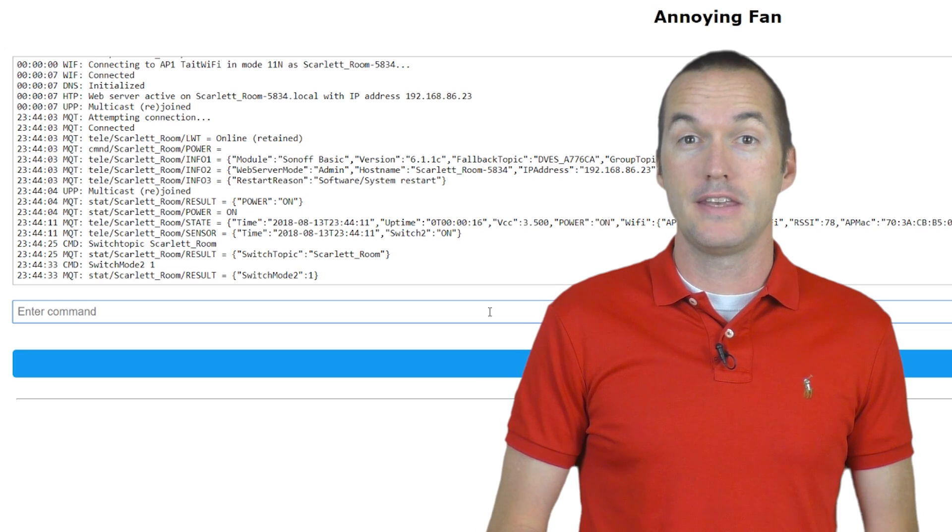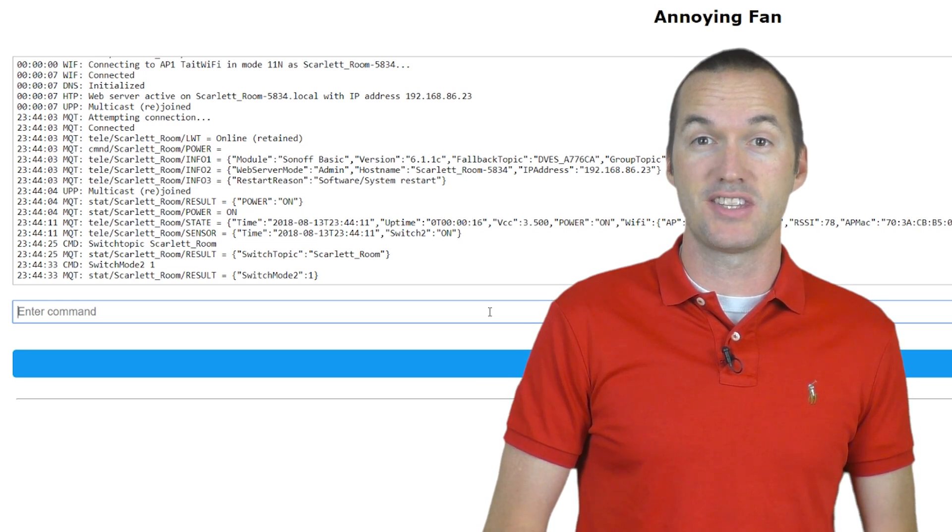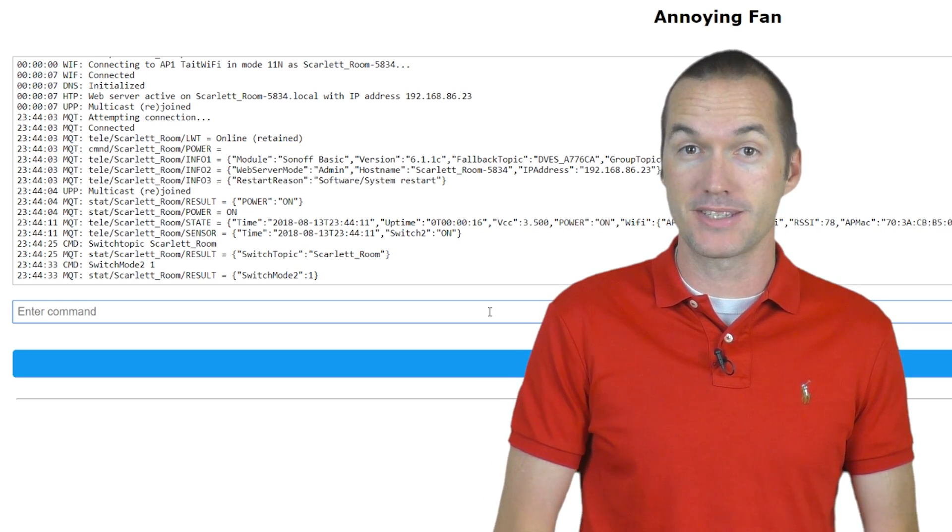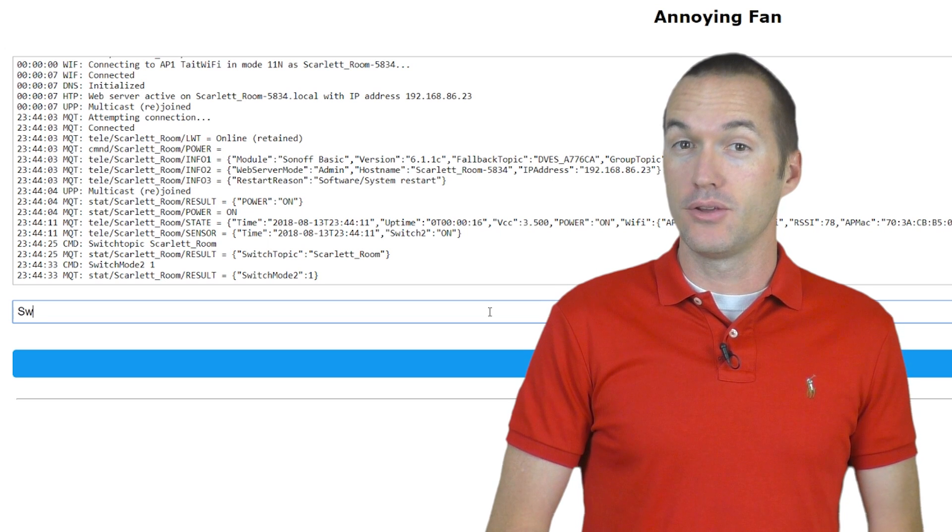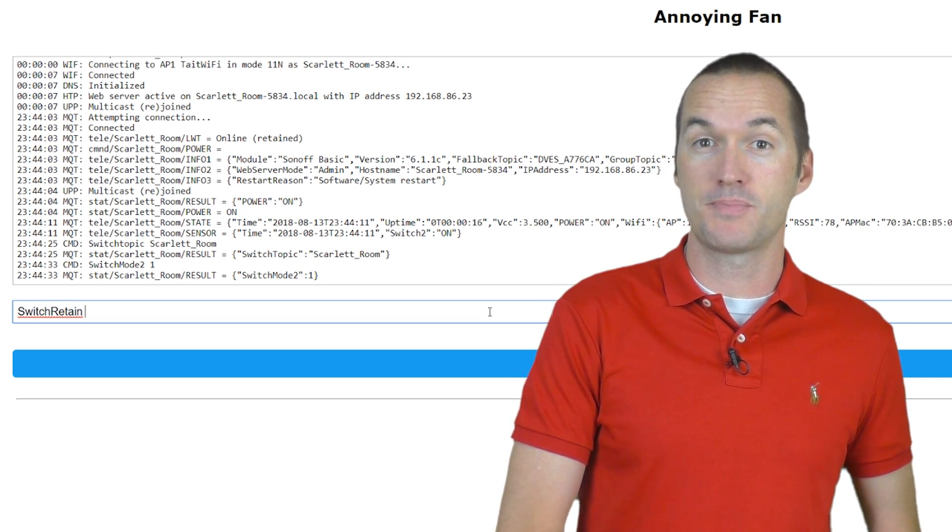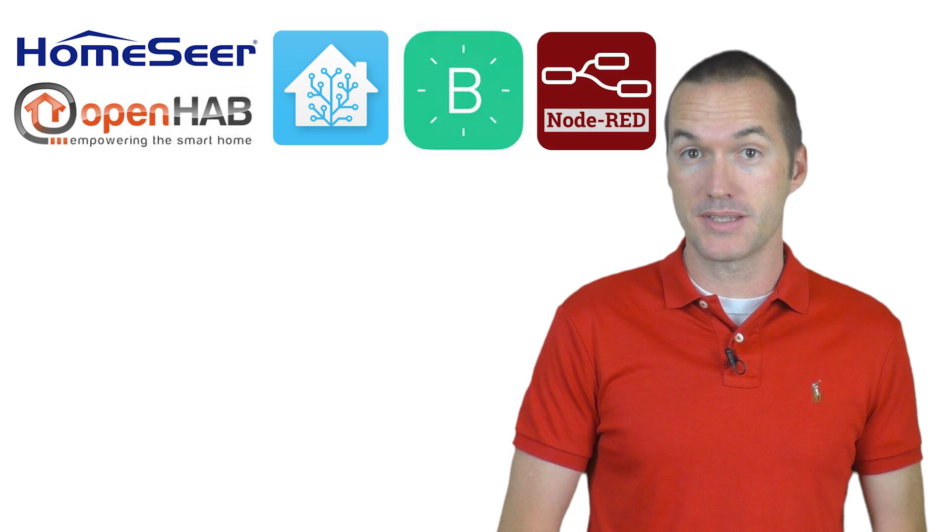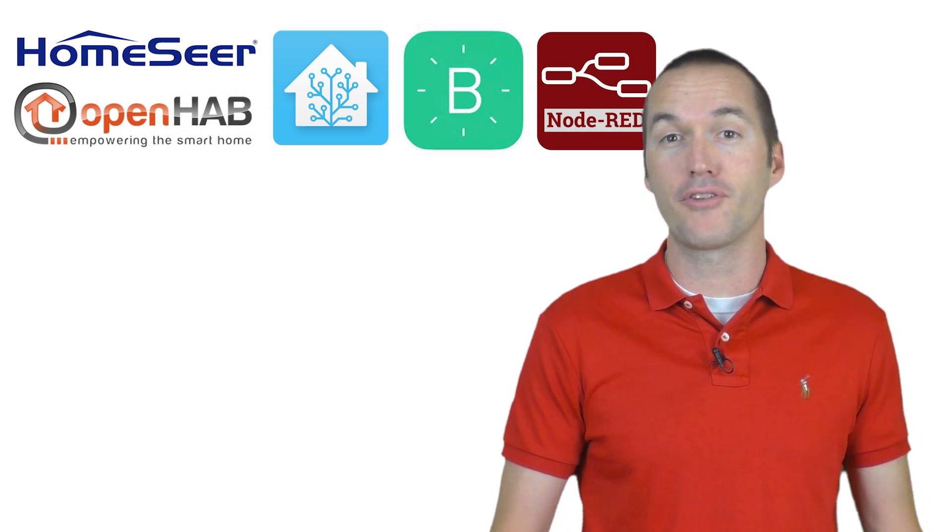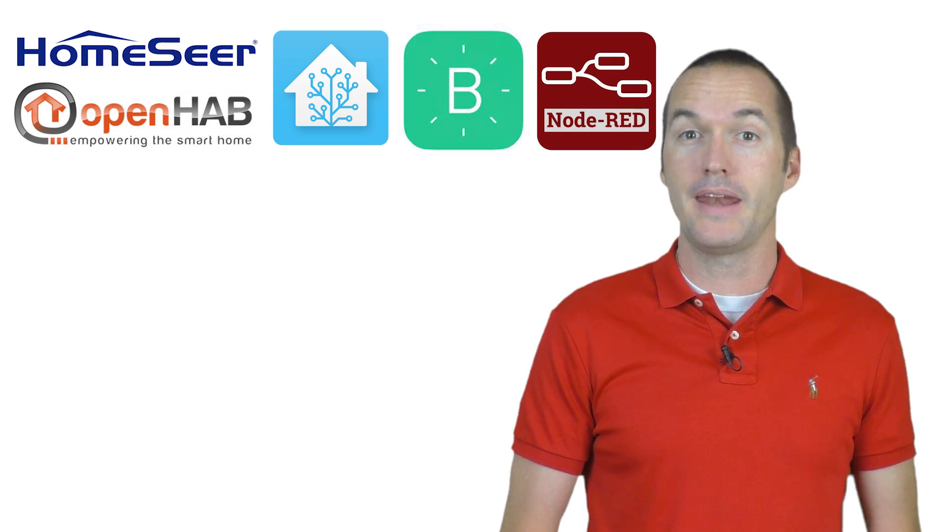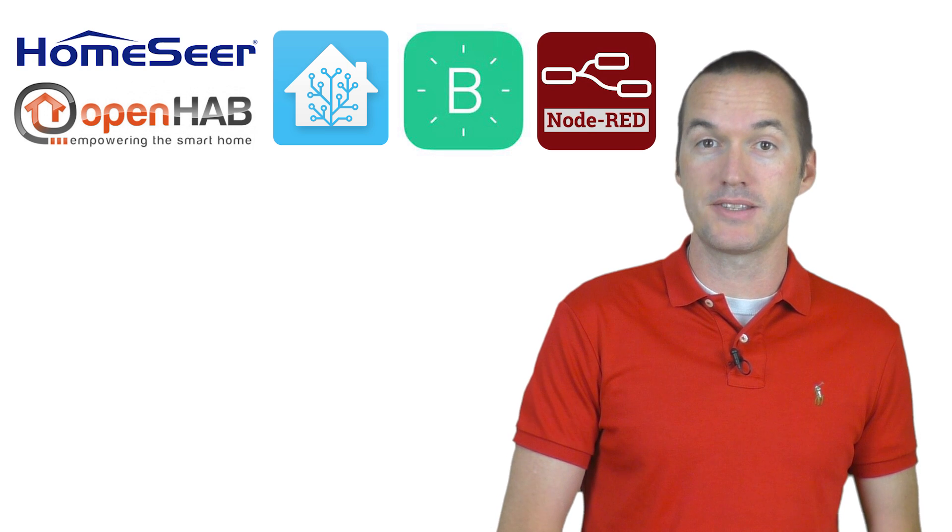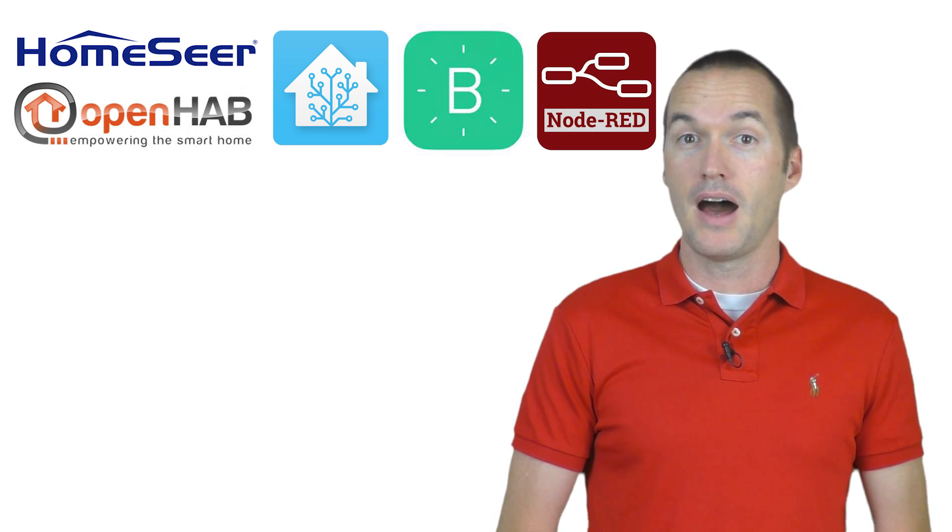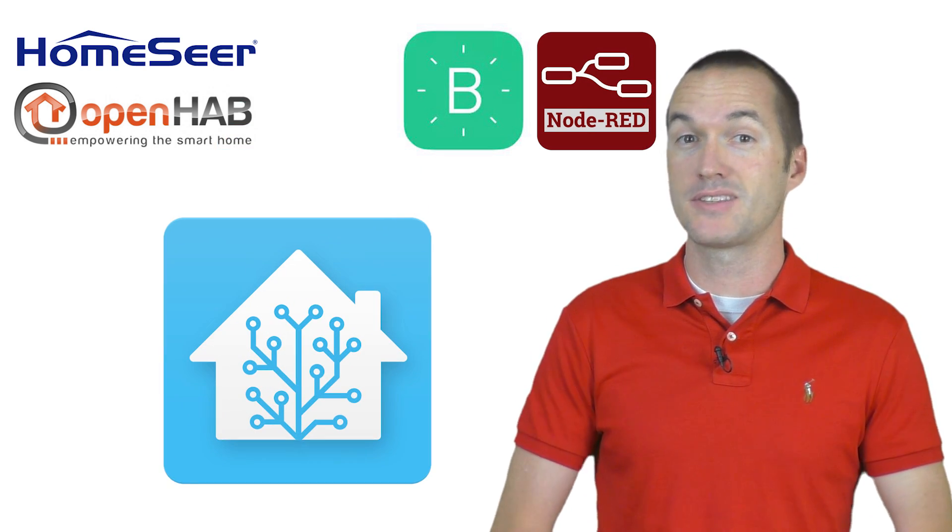The last thing we want to do is retain the last message that the switch sent in the event that Home Assistant restarts. To do this, you'll type in SwitchRetain space on and then press Enter. Next, you'll need to set up Home Assistant or OpenHAB or whatever you're using to monitor your doors, and it needs to respond to the MQTT messages we just set up. I'm going to show the setup in Home Assistant because it's what I use.